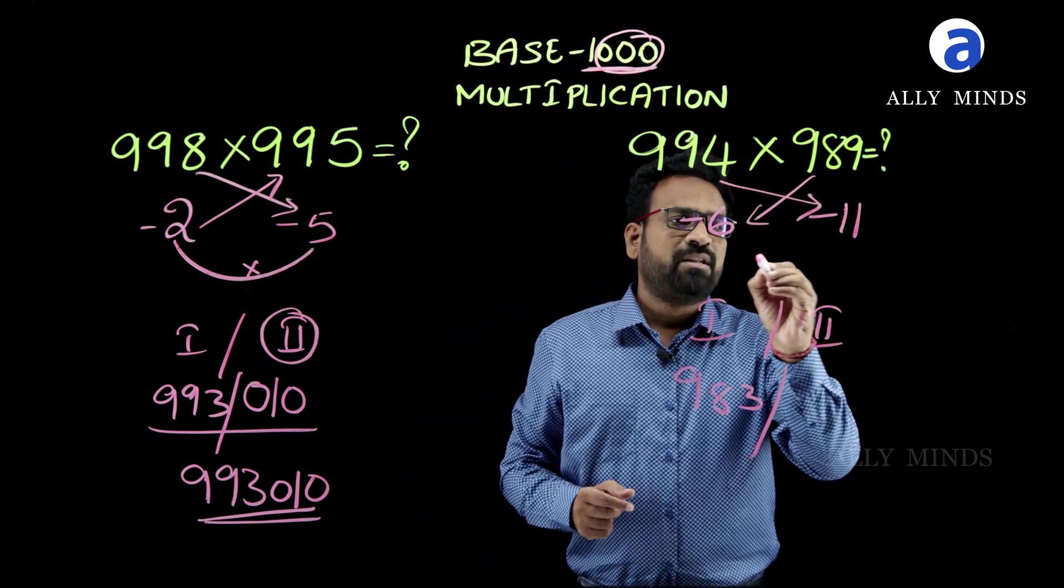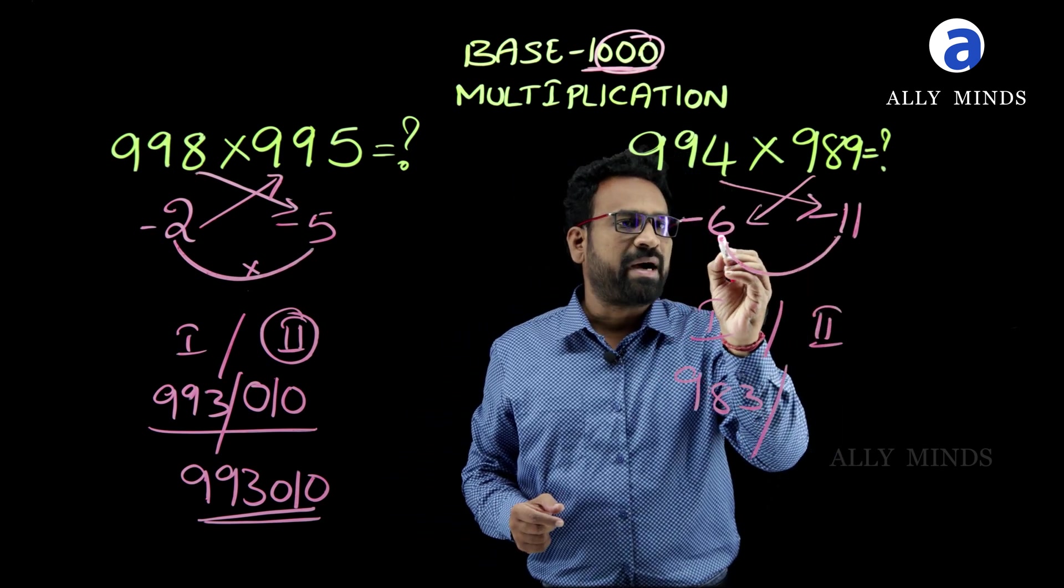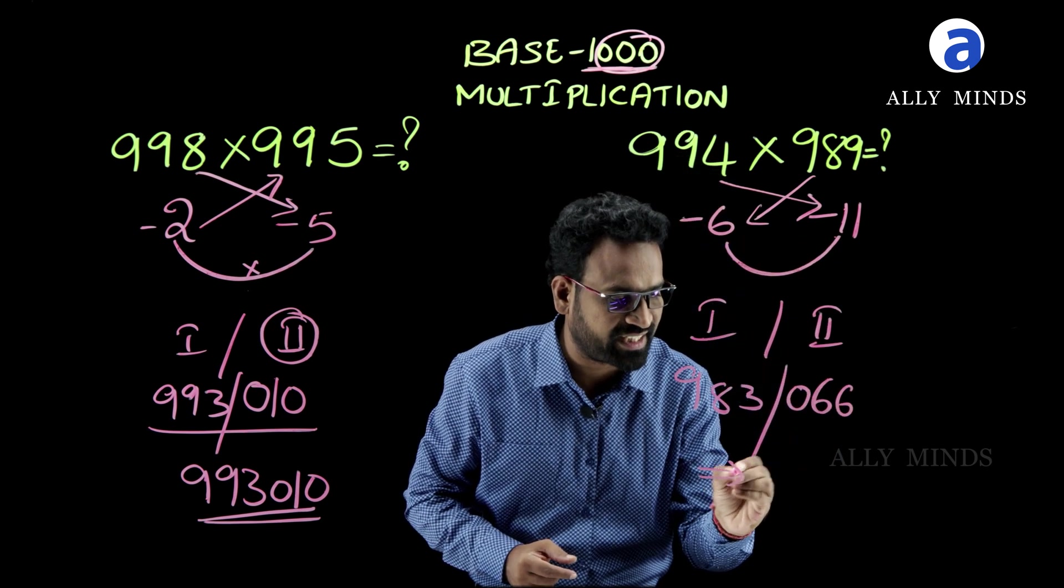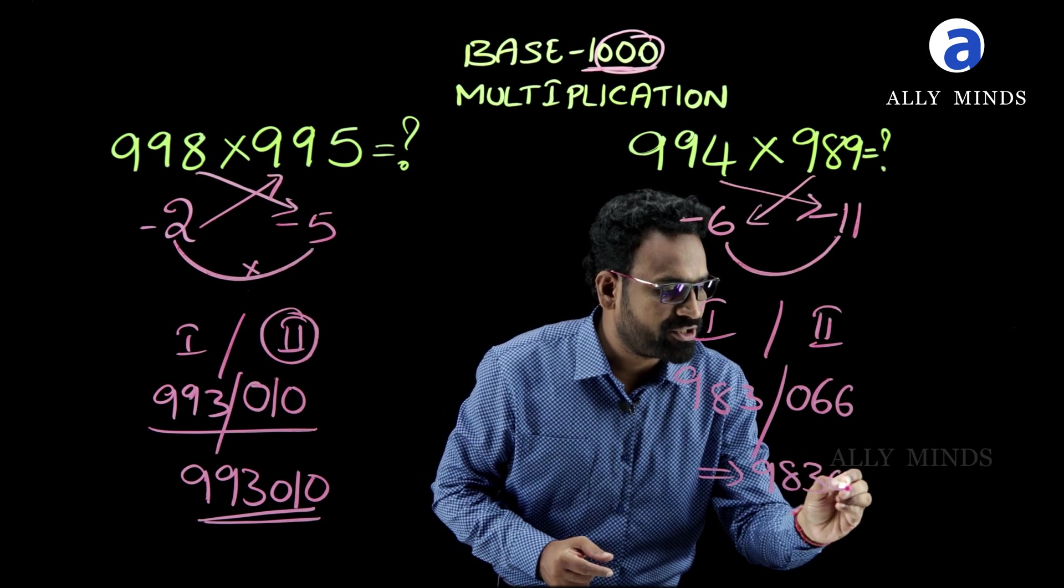And for the second part, just multiply these two numbers. Minus 6 times minus 11 is 66, but we should write it as 066. So our final answer is 983,066.